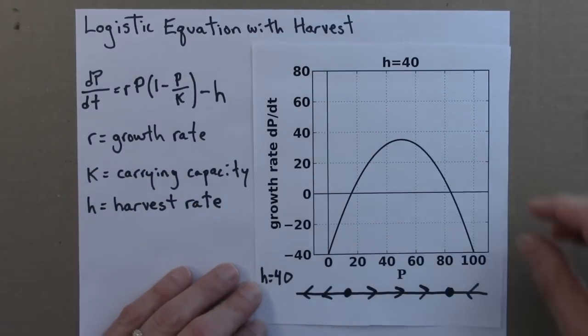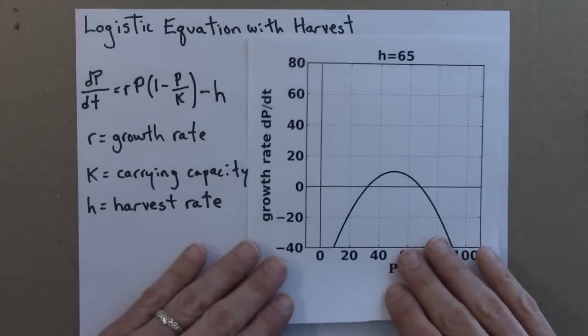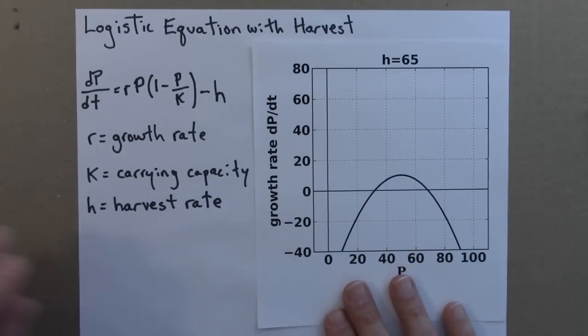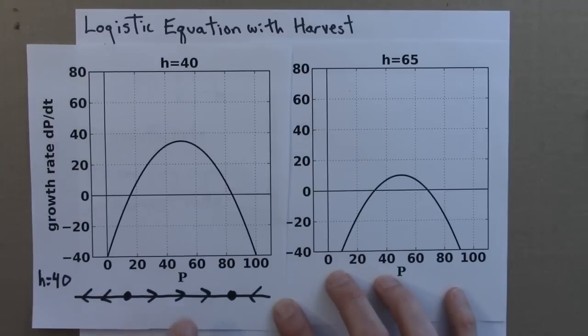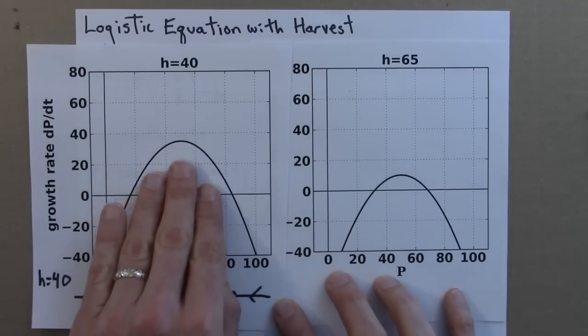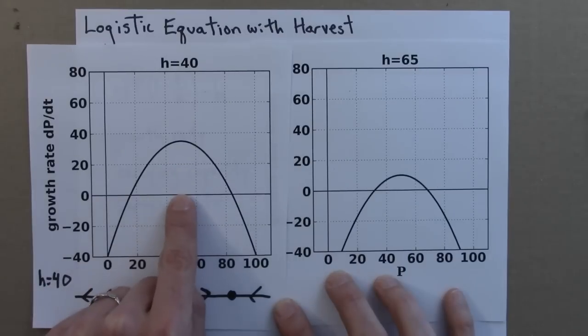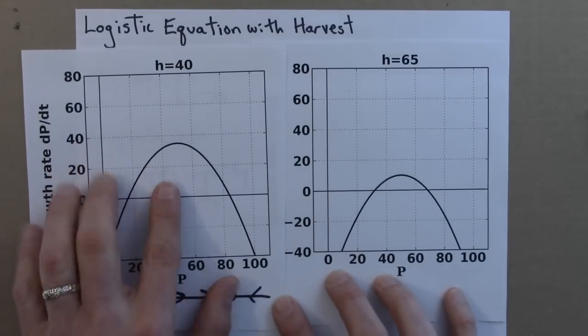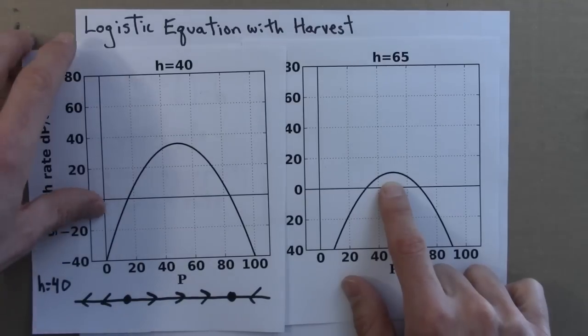So this is h equals 65. Again, notice that as h gets larger, this curve, it's an upside-down parabola, moves down the axis. So now this has moved another 25 down, and it's just kind of barely peeking up above this axis.